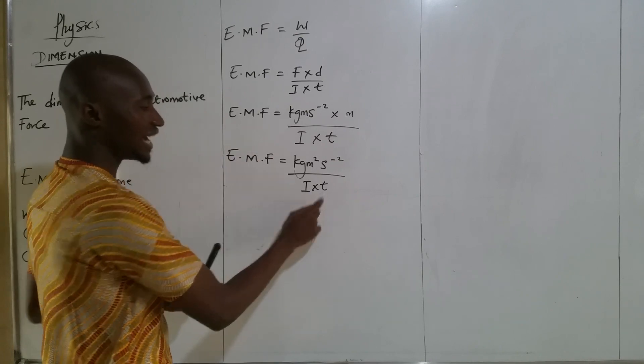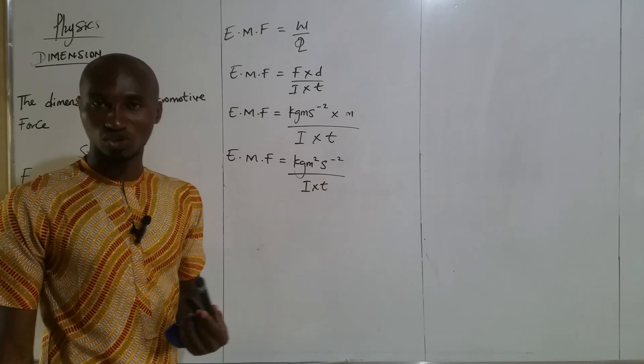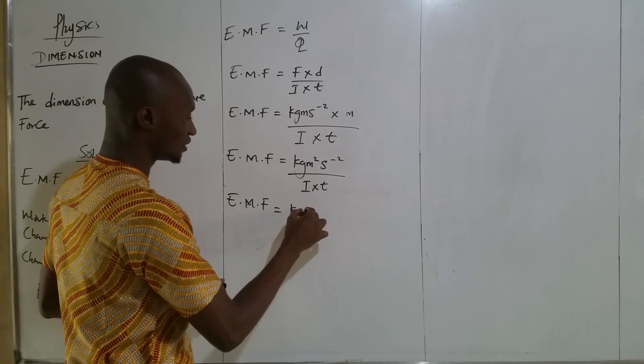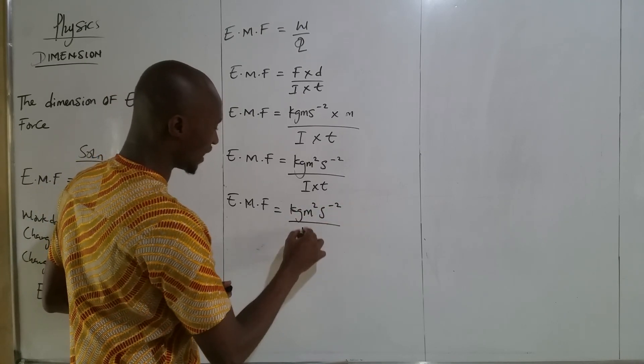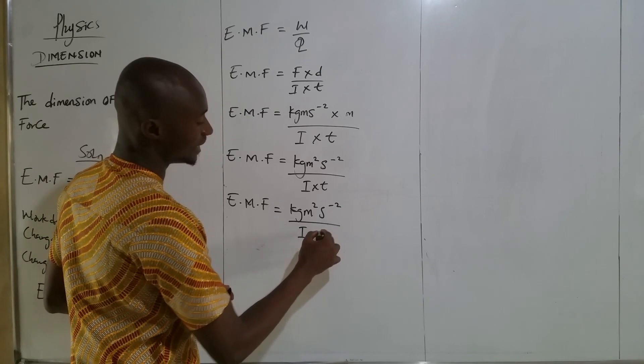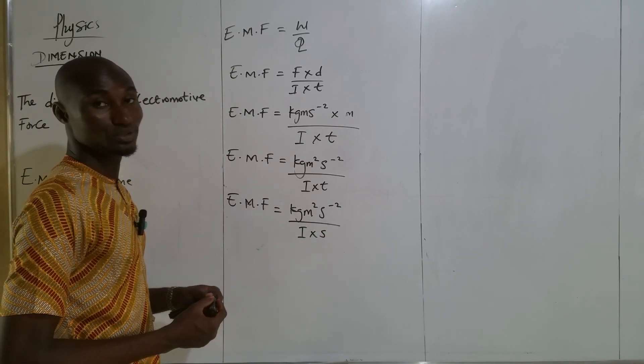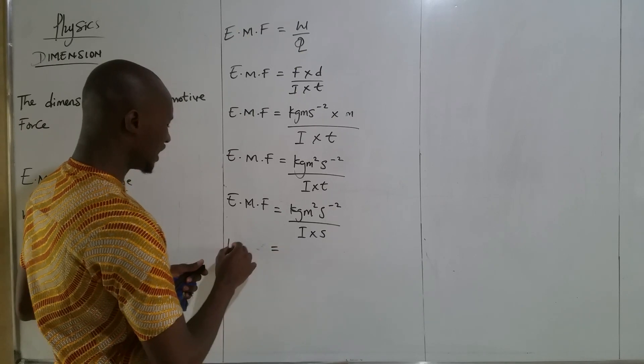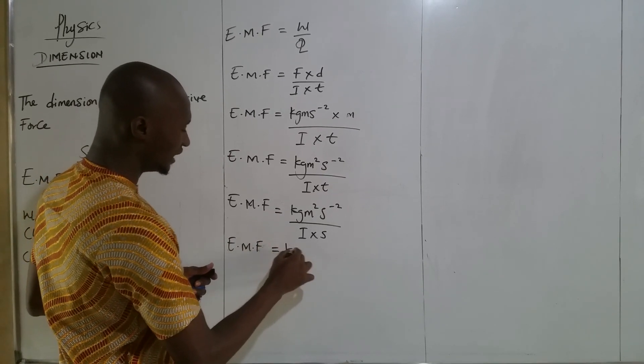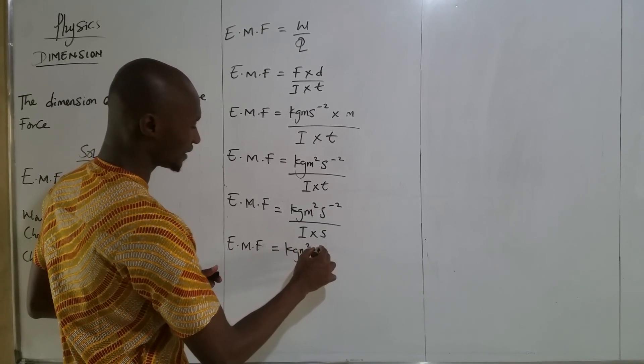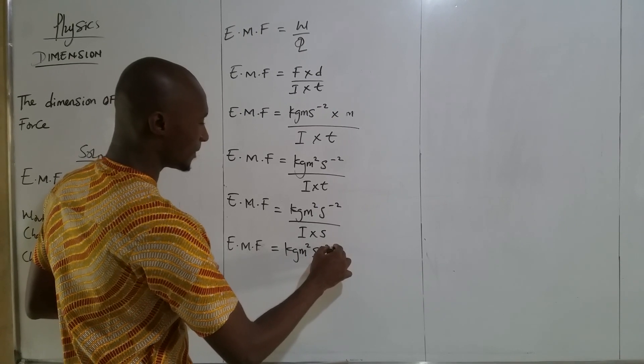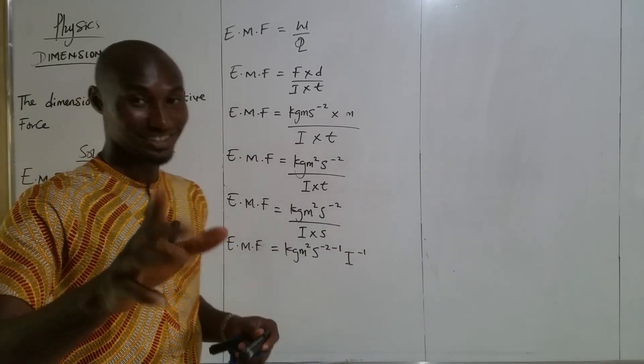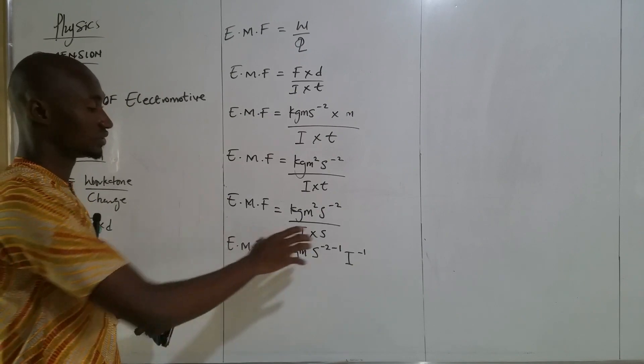Don't forget that time is measured in seconds. So EMF is kg m² s⁻² out of I times s.